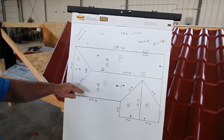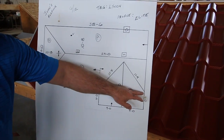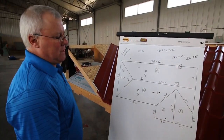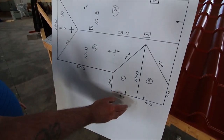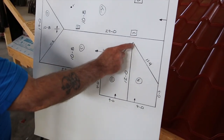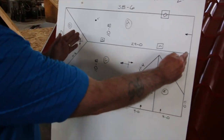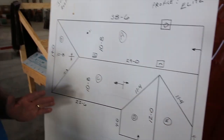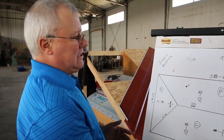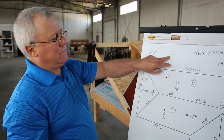You'll see in here your valley lengths — it's nice to know those so we know how much valley material to give you. Another thing we like to know is whether your drawing is accurate. If your ridge line doesn't run into the other ridge line, it's nice to know that — maybe include that distance. Be very accurate with all your measurements. The more accurate you are with the measurements, the more accurate we can be when we do the takeoff.